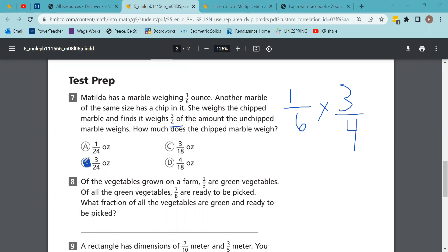Of the vegetables grown on a farm, two-thirds are green vegetables. Of all the green vegetables, seven-eighths are ready to be picked. What fraction of all the vegetables are green and ready to be picked? We've got two-thirds and seven-eighths. You can get 14 over 24. I personally like to cross cancel right away - divide by two, divide by two - and we end up with seven-twelfths of the vegetables ready to be picked.